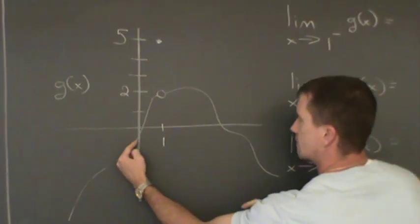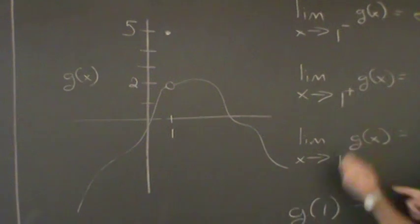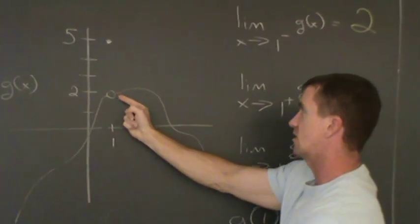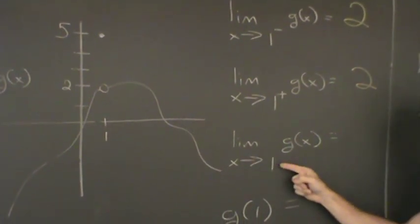The limit as x approaches one from the left side, the y value's getting very close to two. As you approach one from the right side, the y value's getting very close to two. And it's approaching two, the limit as x approaches one. This is a two-sided limit, everyone.